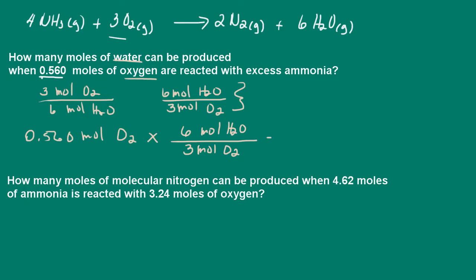And let's go ahead and calculate this. We have 0.56 times 6 divided by 3. So we get 1.12 moles of water. So when we react 0.560 moles of oxygen with excess ammonia, we get 1.12 moles of water vapor.